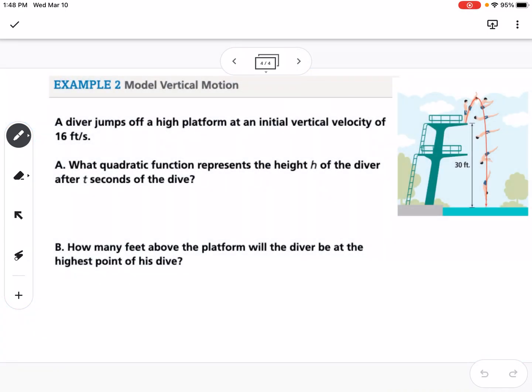So our example is a diver jumps off a high platform at an initial vertical velocity of 16 feet per second. So you can see from our picture that the platform is 30 feet high. So we're going to write the equation, the height as a function of time, so that would be negative 16t squared plus our initial velocity is 16, so 16t plus our initial height, which is 30.